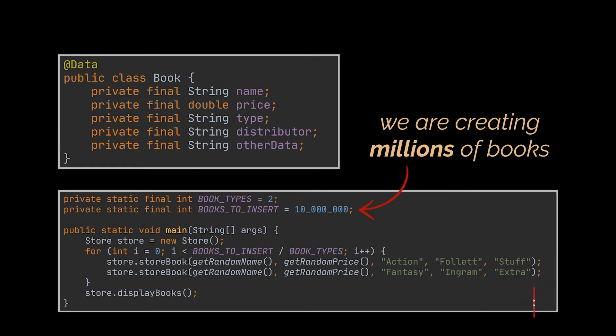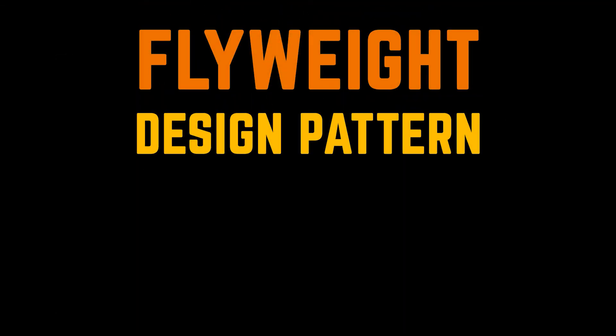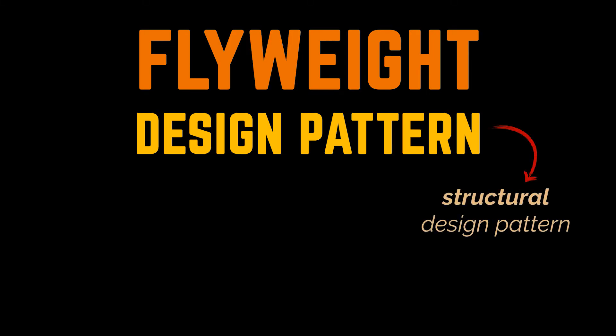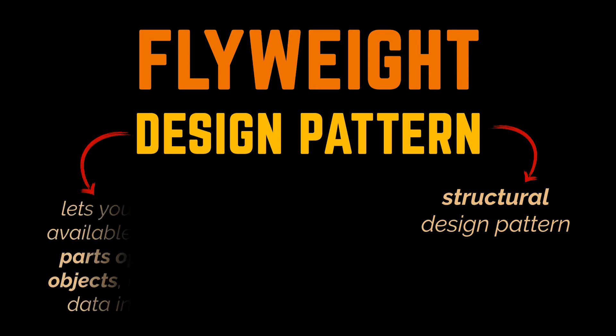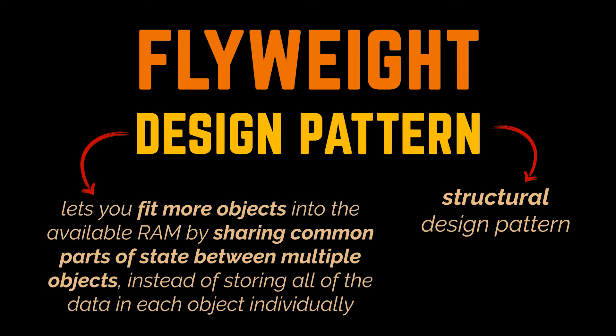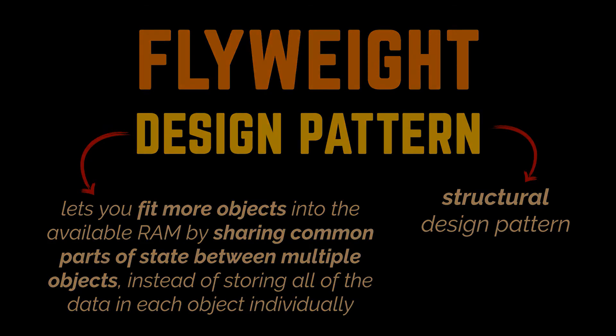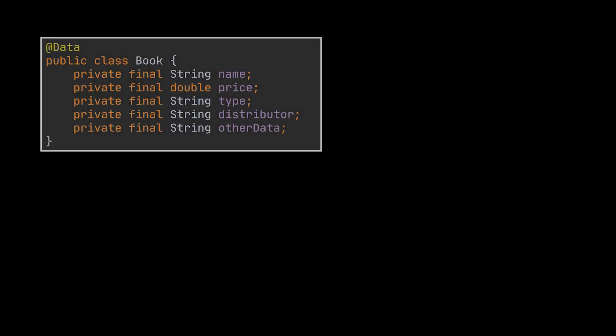A solution to the problem we are facing could be to apply and implement the Flyweight design pattern. This pattern is a structural design pattern that lets you fit more objects into the available amount of RAM by sharing common parts of state between multiple objects, instead of storing all of the data in each object individually. To break this down, let's apply the Flyweight pattern on this example.